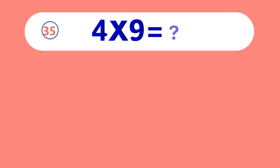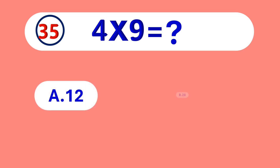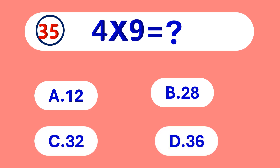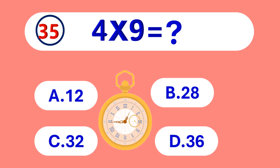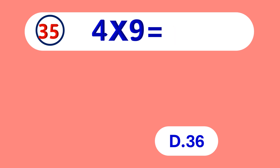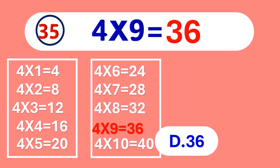4 times 9 is equal to... 36. 4 times 9 is 36.